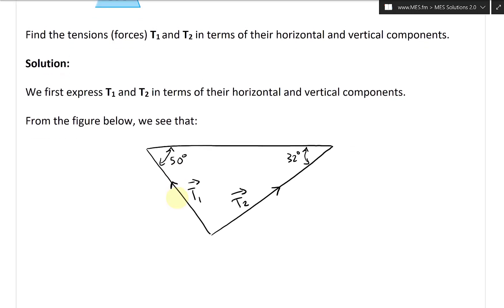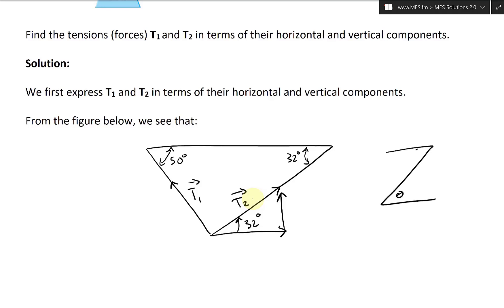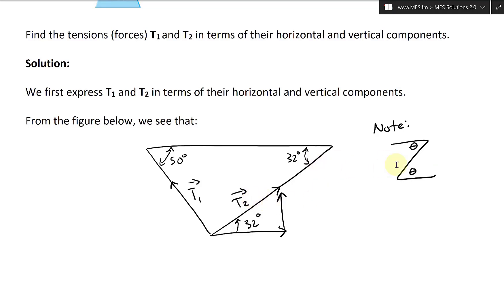Looking at the horizontal components using geometry, we can use the Z-angle rule: alternate interior angles are equal. So this angle of 32 degrees mirrors across. Note that this angle equals this angle — it's the exact mirror image. Likewise, the 50-degree angle here can be used across on the other side.